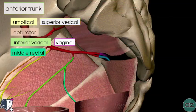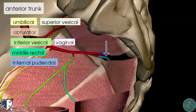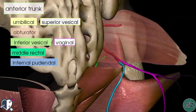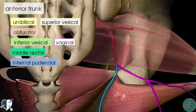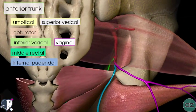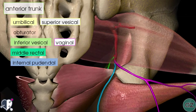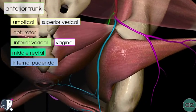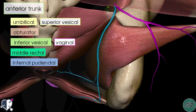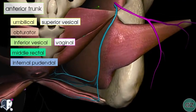The next branch is the internal pudendal artery, shown in blue. It exits the greater sciatic foramen between the ischiococcygeus muscle and the piriformis muscle. It then descends and enters the perineal region via the lesser sciatic foramen, giving off several branches.